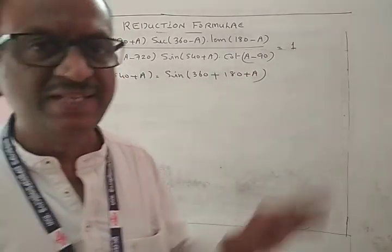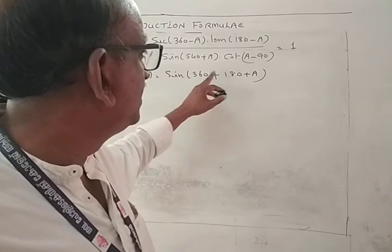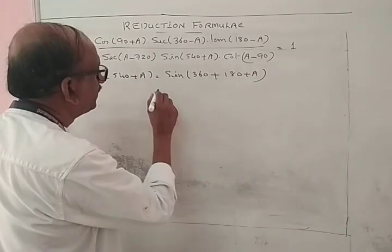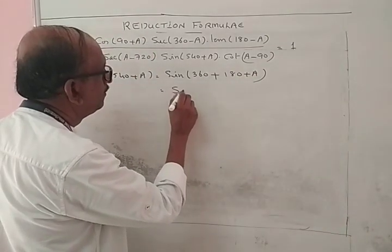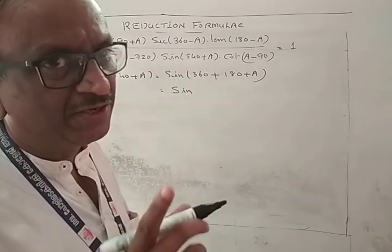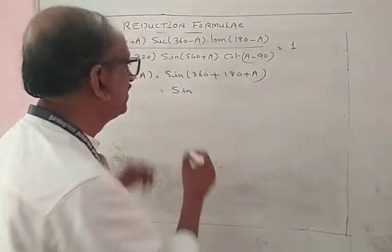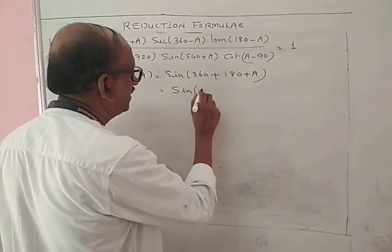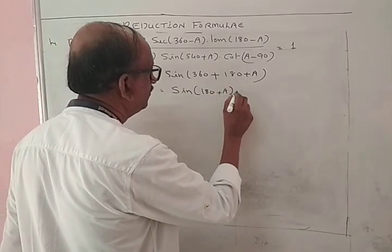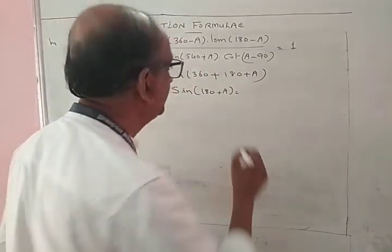540 is the same as 360 + 180. Therefore, 540 + A = 360 + 180 + A. Since 360 = 0, this becomes 180 + A. The standard result: sin(180 + A) = minus sin A.